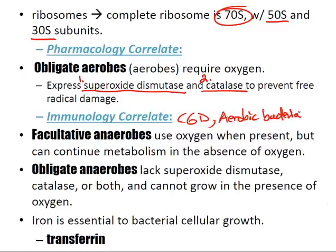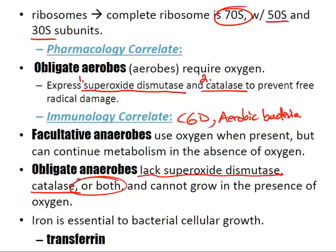Obligate anaerobes lack superoxide dismutase and cannot grow in the presence of oxygen. Clinical laboratories can differentiate bacteria based on which sugars they metabolize and how. Iron is essential for bacterial cellular growth — remember that.